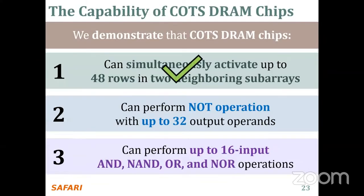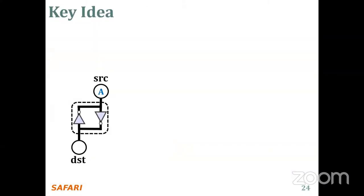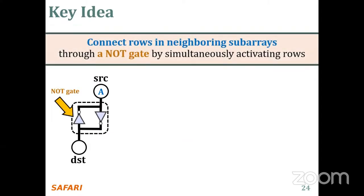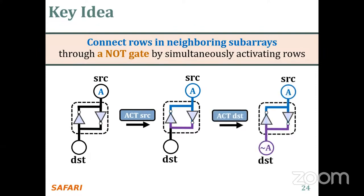Now, the second analysis: the NOT operation. Our key idea is to leverage the connection between neighboring subarrays — specifically the NOT gate in the sense amplifier. By simultaneously activating rows in neighboring subarrays, we can connect these rows through a NOT gate. As an example, if we first activate the source and then activate the destination without deactivating the source cell, this results in the sense amplifier driving the negative source value to the destination.